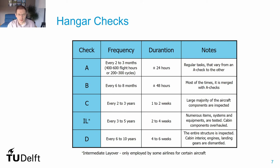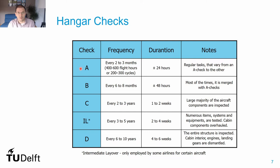Let's first look at the aircraft maintenance checks, the ones performed at the hangar, where we remove the aircraft from operations for several hours or several days. These checks are divided into categories reflecting the level of maintenance tasks they comprise. Traditionally, airlines divide checks into A checks — regular tasks performed every two or three months — and C checks, which include more time-demanding overall tasks performed every two or three years. B checks nowadays are typically divided into smaller blocks and merged with A checks.